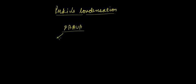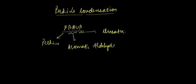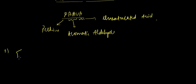Hi guys, in this lecture we'll be starting off with Perkins condensation. So let's get started. Perkins condensation - it's a short trick to remember that aromatic aldehyde gets converted into unsaturated acid. So suppose we have aromatic aldehyde.